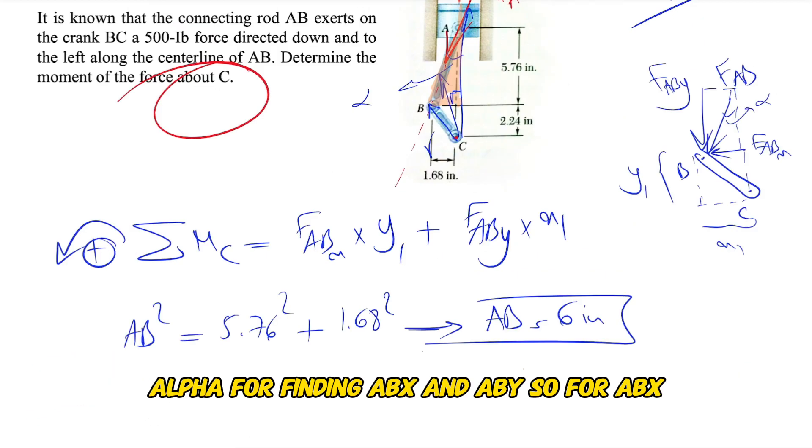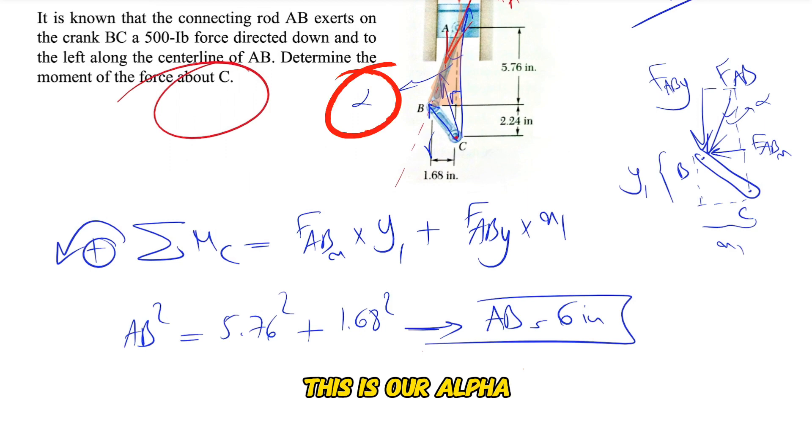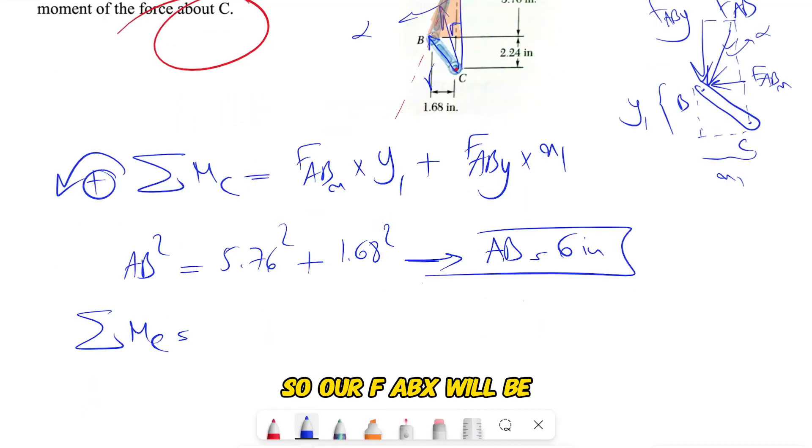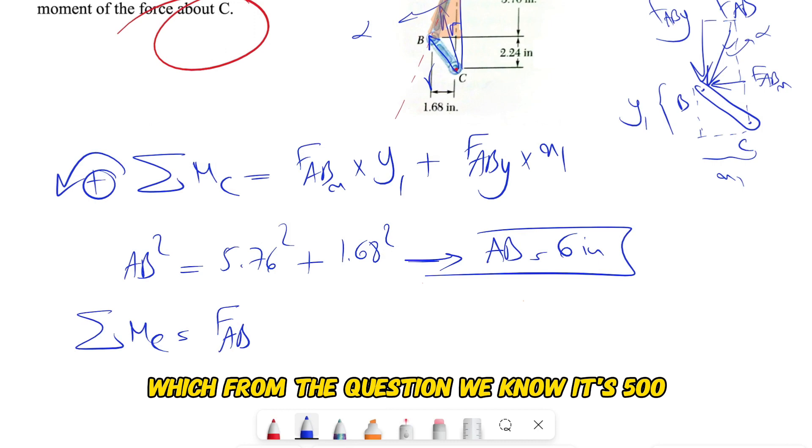So for ABx - so I'm showing in here our angle that we found, this is our alpha - so our FABx will be: we'll have the sine of alpha, so we'll have FAB, which from the question we know it's 500.